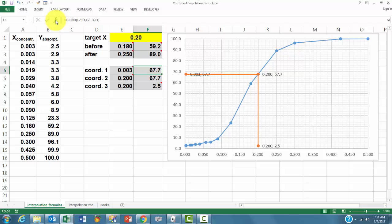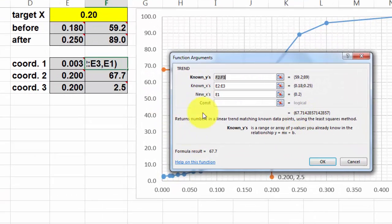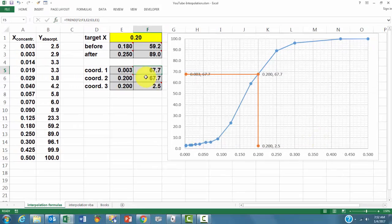The TREND function wants to know what are the known Y's, these two guys, the known X's, and the new X is E1. And this one is the same. Then you will get this line. That's how you can do it with functions.